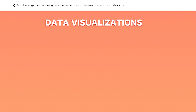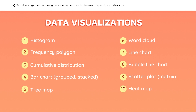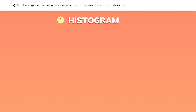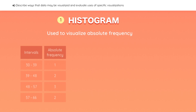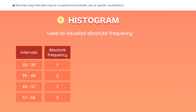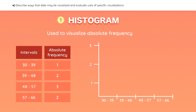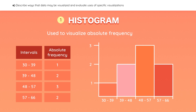In this next learning outcome, we will review all the different ways that data can be visualized. A histogram is used to visualize absolute frequency. Simply place the intervals on the x-axis and the absolute frequency on the y-axis. You can quickly see that there are three observations that fall between 48 and 57 degrees.